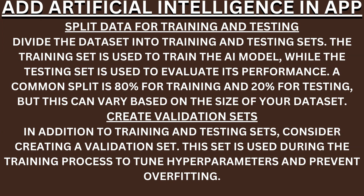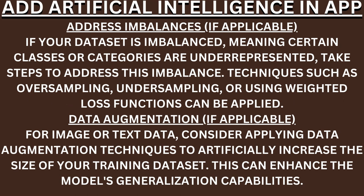Split data for training and testing. Divide the dataset into training and testing sets. The training set is used to train the AI model while the testing set evaluates its performance. A common split is 80% for training and 20% for testing, but this can vary based on the size of your dataset. Create validation sets. In addition to training and testing sets, consider creating a validation set, which is used during training to tune hyperparameters and prevent overfitting.